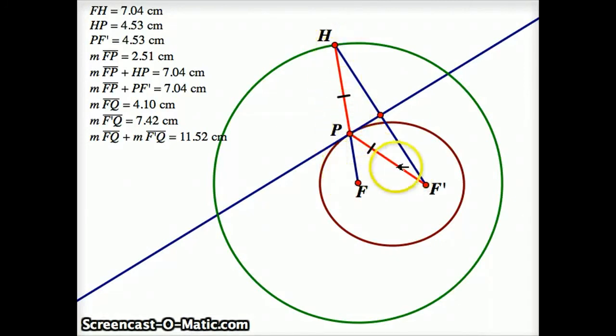HP and FP are congruent. And since FP and PH equals the radius, FP and PF prime together also equals a constant, which is the radius, and that's what makes something an ellipse.